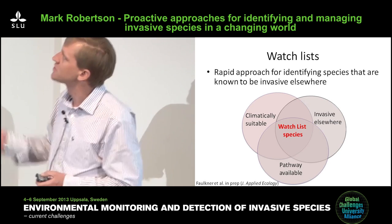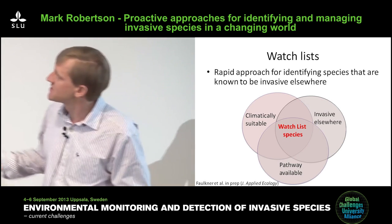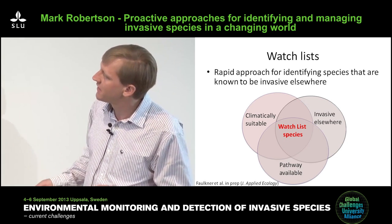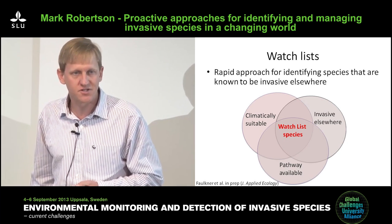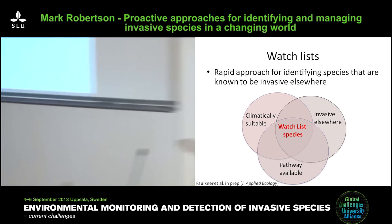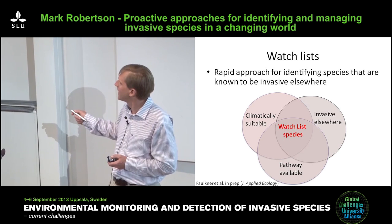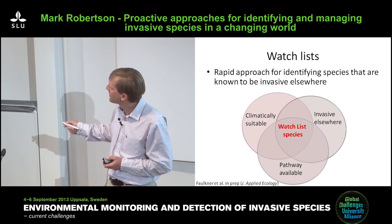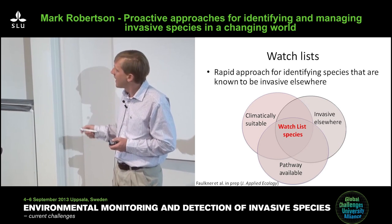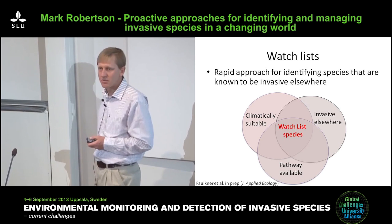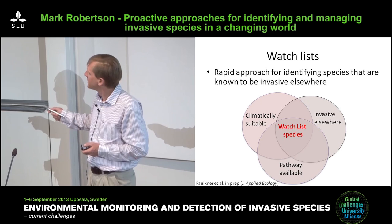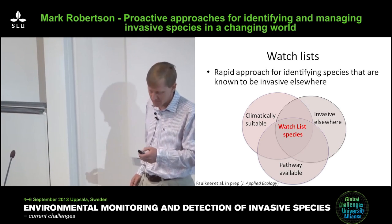The first topic is watch lists. The idea behind a watch list is a rapid approach for identifying species known to be invasive elsewhere, using different criteria to identify species you don't want entering your country or region. If we take all species invasive elsewhere from a global list, then determine areas that are climatically suitable, and identify pathways likely to result in introduction — combining these three sources of data, you can develop a watch list.